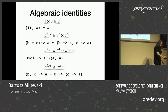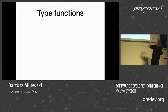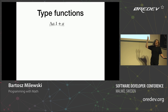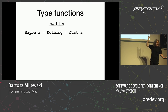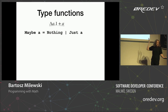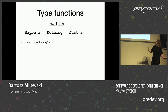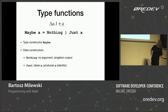Once you have the algebra, you can define functions on types. Here's an example — a capital lambda because it's a function on types — it takes a type A and produces one plus A. That's Maybe! One corresponds to the Nothing constructor, which is just a unit, and A is the constructor called Just. So given the algebra of types, we can produce functions on types — and functions on types are the necessary ingredient for generic programming.